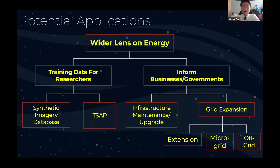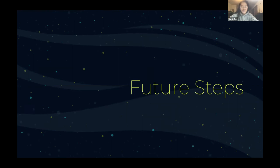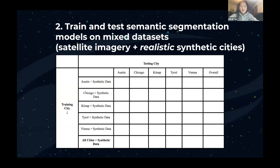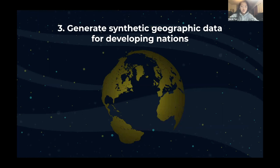Thank you, Winston. For a more detailed near-future plan: we would like to use this pipeline — texture extraction, texture synthesis, and texture substitution — to generate a dataset of synthetic studies, incorporating other textures not only rooftops, but also forests, rivers, roads, and cars. We will then train and test our semantic segmentation models on mixed datasets combining satellite imagery and realistic synthetic cities. Lastly, we hope to generalize synthetic geographic data for more developing nations, and eventually expand to all geographies to map out energy grids worldwide.